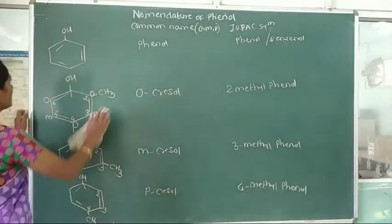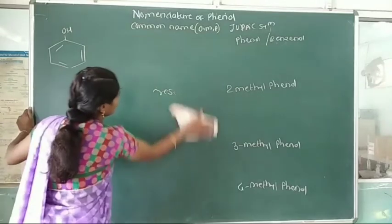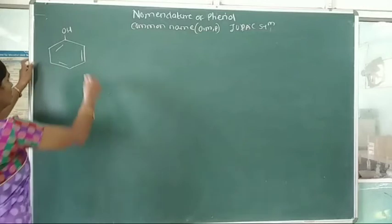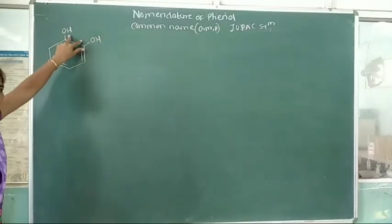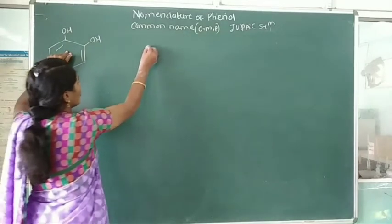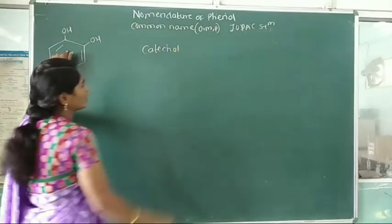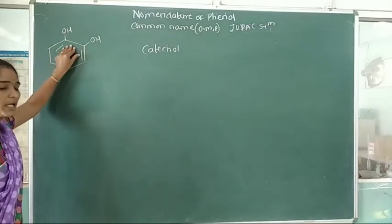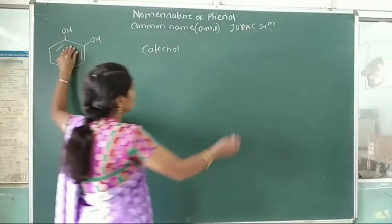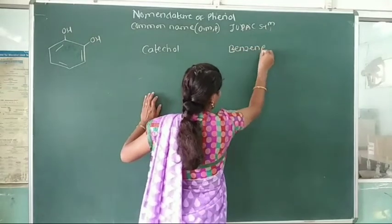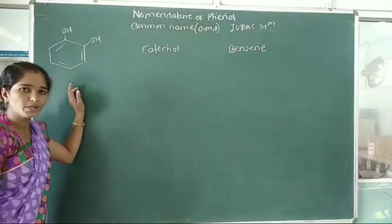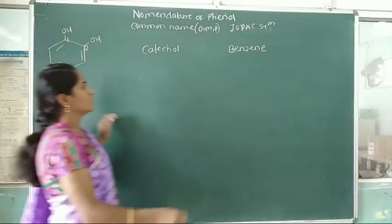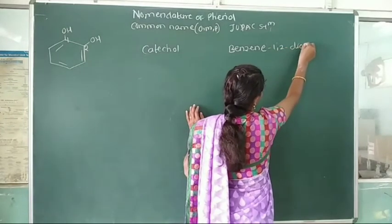Now we see another example: suppose two hydroxy groups are attached to the benzene ring. The common name of this compound where the two hydroxy groups are ortho to each other is catechol. In the IUPAC system, we write the name of the benzene ring and indicate the carbon numbers to which the hydroxy groups are attached, adding the suffix '-diol'. The hydroxy groups are on carbon 1 and carbon 2, so the IUPAC name is benzene-1,2-diol.